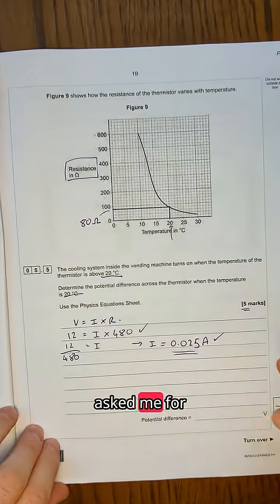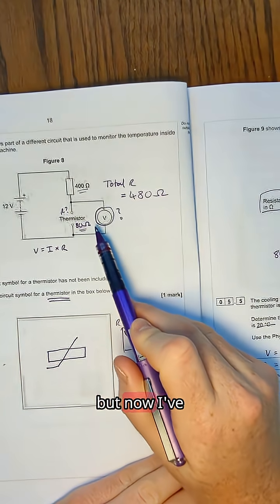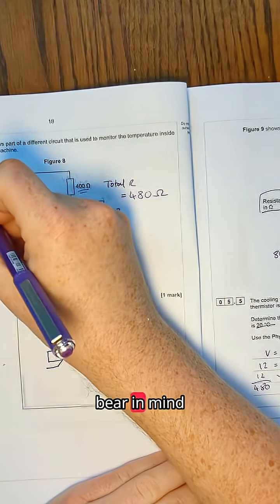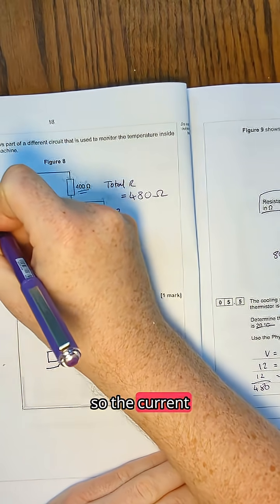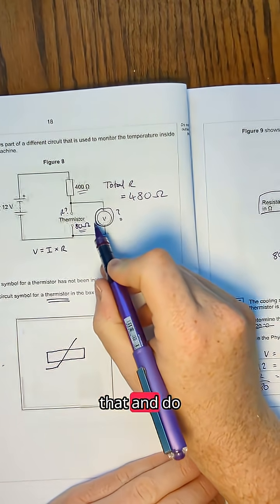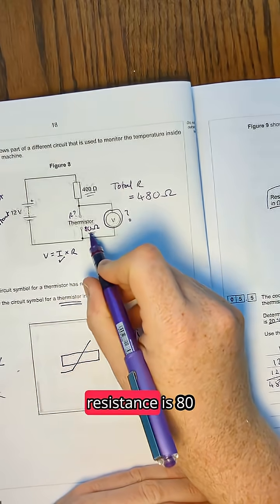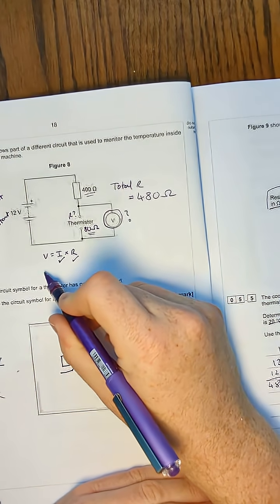However, the question asked me for the voltage across this thermistor here. But now I've got the total current in the circuit. Bear in mind, it's a series circuit. So the current is constant. If I know what that is at any point, I can use that and do V equals IR again to work out what the voltage is if I know the resistance is 80 and the current is 0.025.